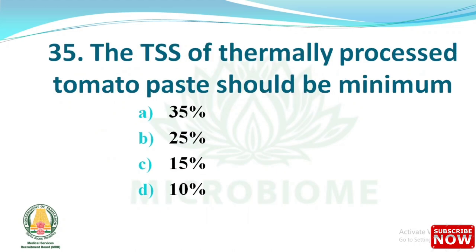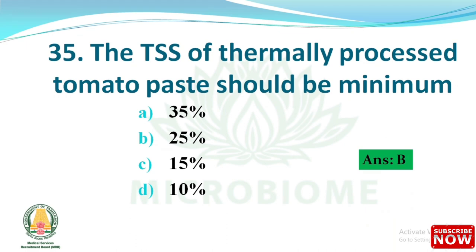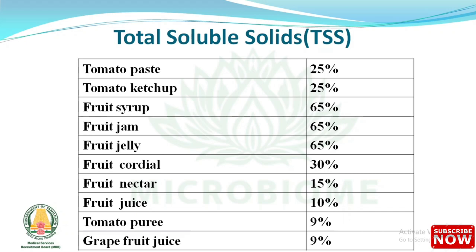Next question: the TSS (Total Soluble Solids) of thermally processed tomato paste should be a minimum of — options: 35%, 25%, 15%, 10%. The right answer is option B, 25%. TSS is defined as the amount of sugar and soluble minerals present in fruits and vegetables, measured by hand refractometer based on the principle of total refraction. TSS values: tomato paste 25%, tomato ketchup 25%, fruit syrup 65%, fruit jam 65%, fruit jelly 65%, fruit cordial 30%, fruit nectar 15%, fruit juice 10%, tomato puree and grapefruit juice 9%.